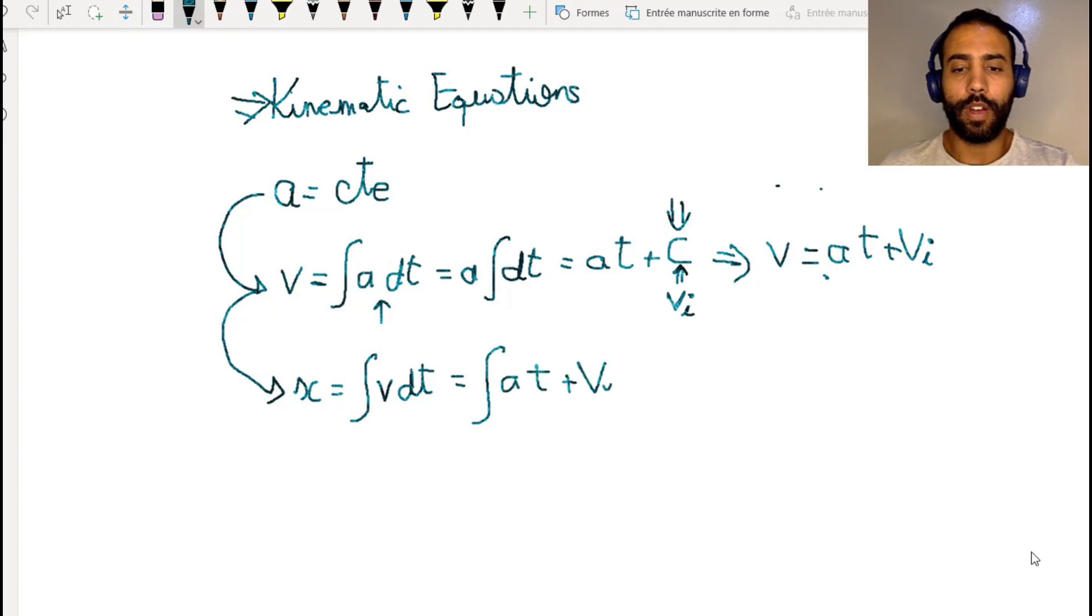We're integrating at plus v_i with respect to time. Let's calculate this. So we have at dt, and the acceleration is constant, so we can take it out of the integral. We end up with a times the integral of t dt.